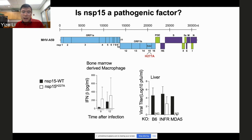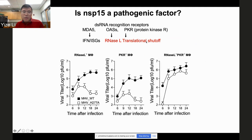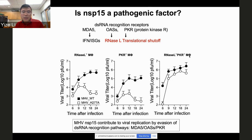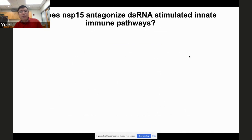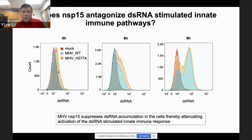The three major dsRNA pathways are: MDA5 inducing interferon, OAS inducing RNase L, and PKR inducing translational shutdown. When we placed the virus in RNase L-knockout or PKR-knockout macrophages, there was only little restoration. But combining all knockouts with MDA5 restored replication substantially. We also found that Nsp15 suppresses dsRNA accumulation — wild-type virus produces less dsRNA while the mutant virus produces much more. We conclude Nsp15 suppresses dsRNA accumulation, thereby attenuating activation of dsRNA pathways.